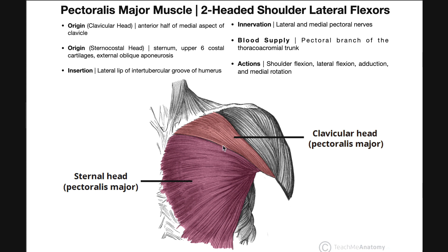This muscle right here is pectoralis major and we can see that it's actually divided into two separate parts. There's a part that's going to originate off of the clavicle and so it's aptly named the clavicular head. This is the most superior part of the pectoralis major. The largest part is located beneath the clavicular head and this is what's often called the sternal head or the sternocostal head.